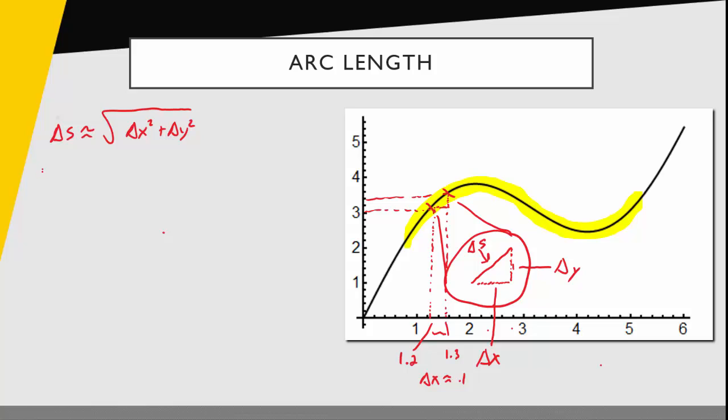And now I'm going to do a little bit of algebra on that expression. What I'm going to do is I'm going to factor out a delta x squared. I'll get delta y squared over delta x squared, factoring out my delta x squared. And then I will simplify this a little bit.